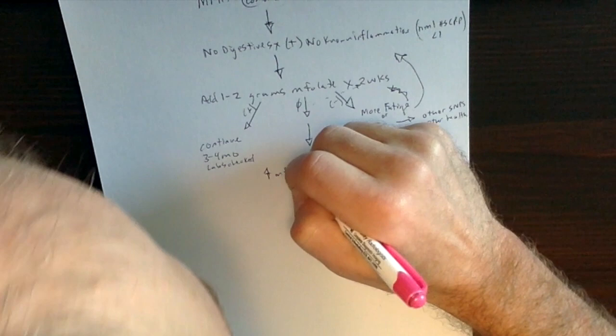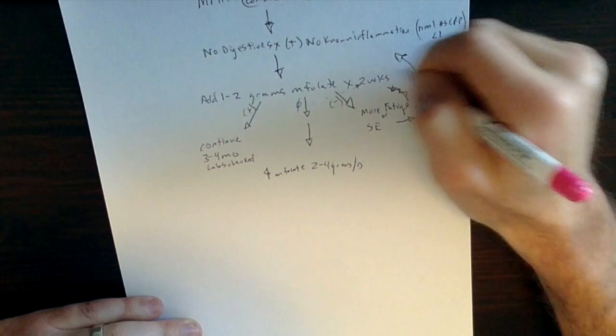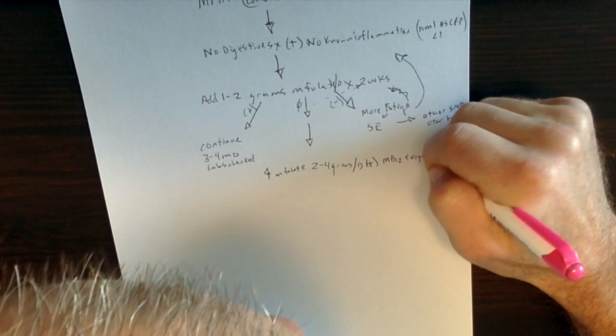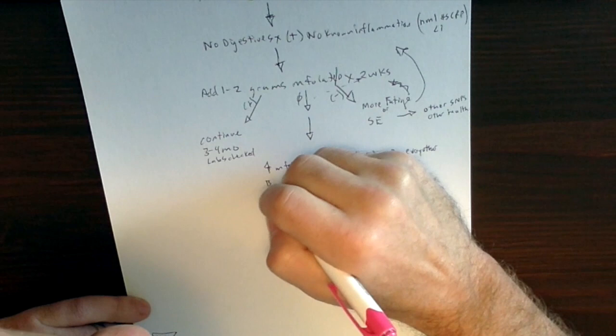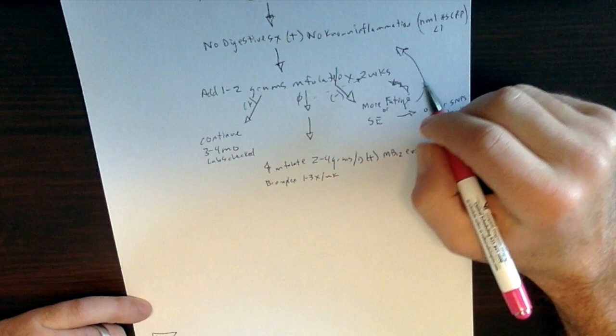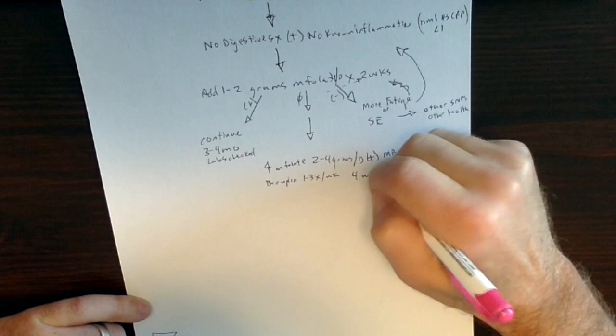And we're going to say increase methylfolate two to four grams. This is per day, per day. Plus, you know, in this case, you need to add methyl B12, maybe every other day. You could do it every day too. It depends what the snips, other snips there are. And then B complex, make sure it doesn't have any folic acid in it, but B complex one to three times per week. And then you would do this for four weeks or so.